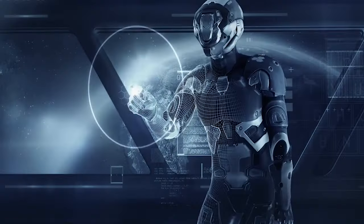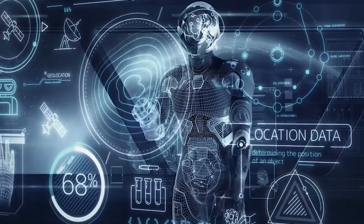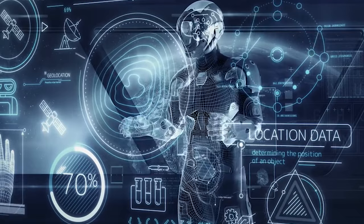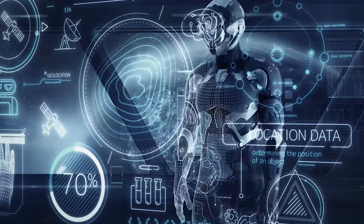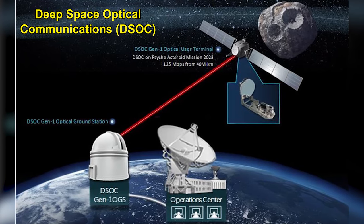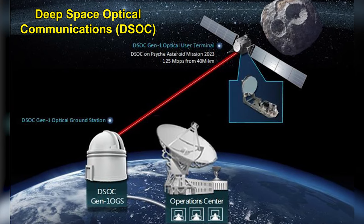But why did NASA send a cat video from deep space? And how did they do it? Well, it's all part of a technology demonstration called DSOC, which stands for Deep Space Optical Communications.